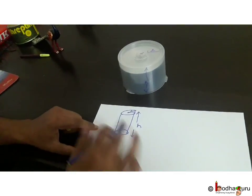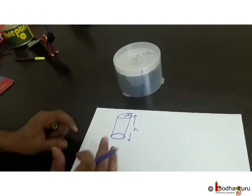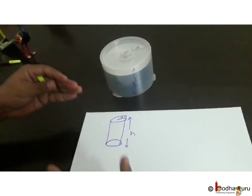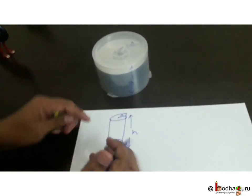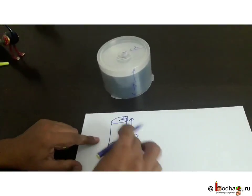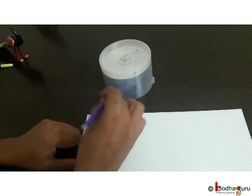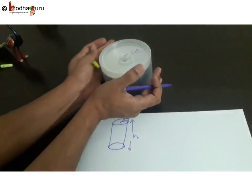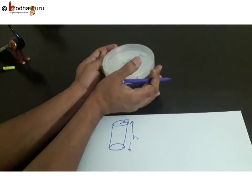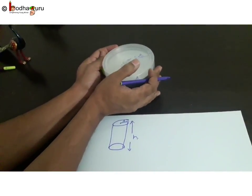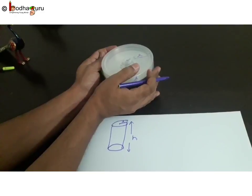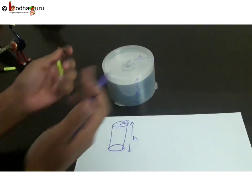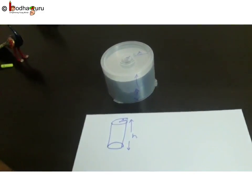The volume is the space occupied by the cylinder — how much we can fill this cylinder, how many DVDs can fit inside this cylinder, and so on. So let's try to find that out.